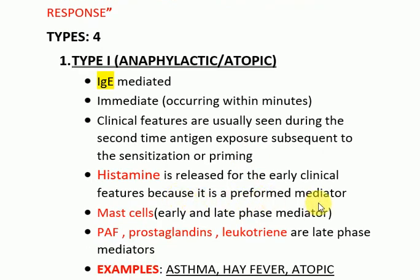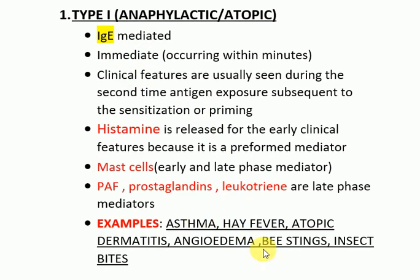Histamine is released for the early clinical features because it is a preformed mediator. Mast cells are early and late phase mediators. Other late phase mediators are platelet activating factor, prostaglandins, and leukotrienes. Examples of Type 1 reactions are asthma, hay fever, atopic dermatitis, angioedema, bee stings, and insect bites — all causing immediate reactions.